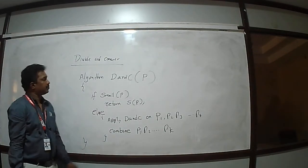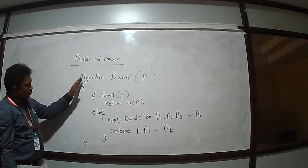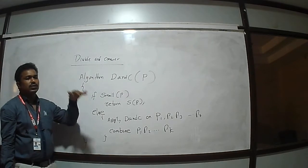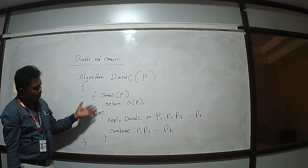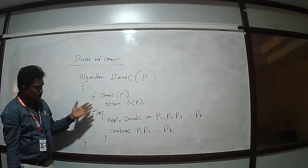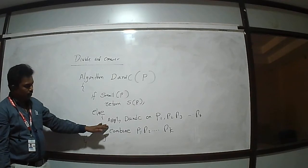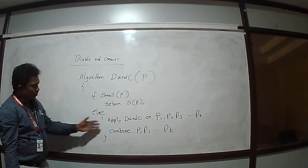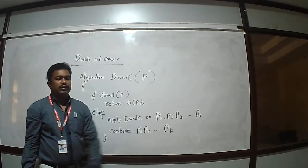The Divide and Conquer general method states: if the problem is complex, divide it into smaller sub-problems. If the sub-problem is still large, again divide it into smaller problems, continuing until we are able to solve the problem. Later, we combine the solutions of all the sub-problems to get the solution for the given problem.